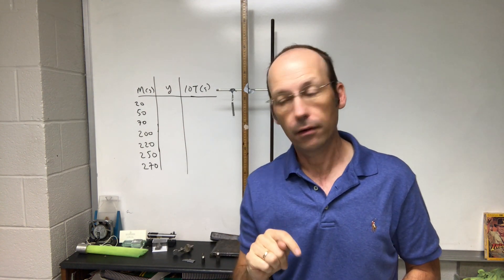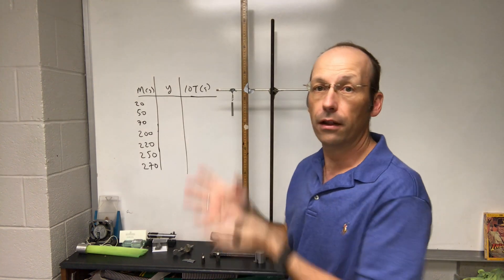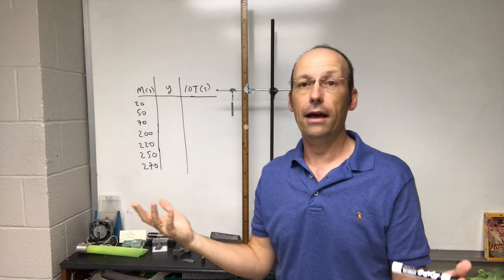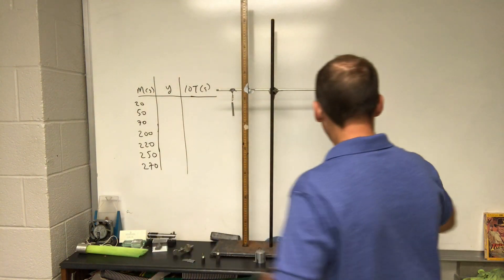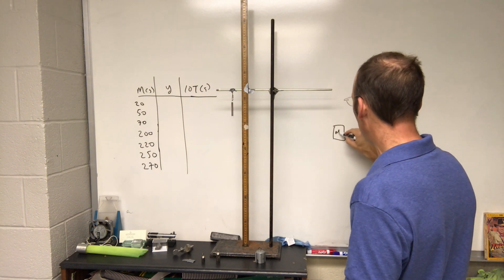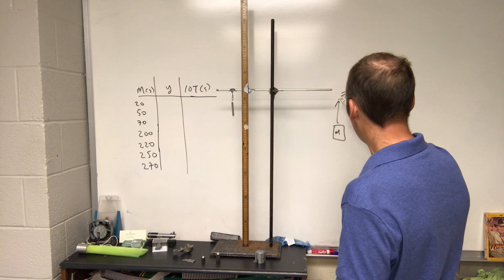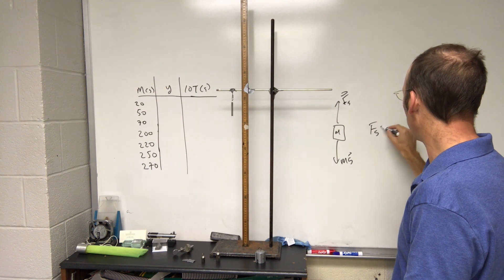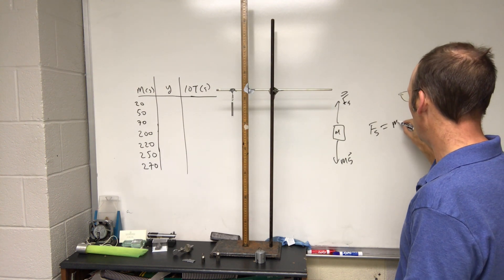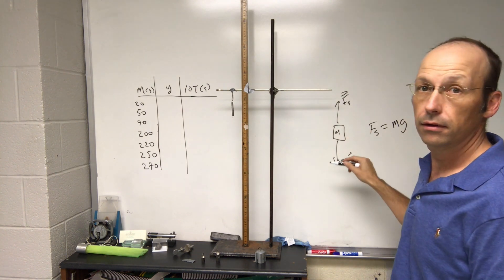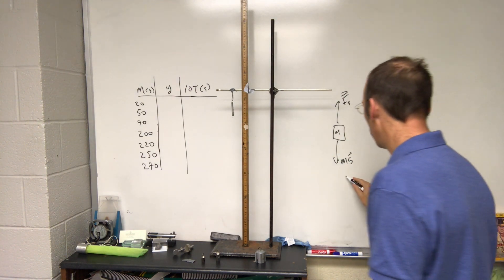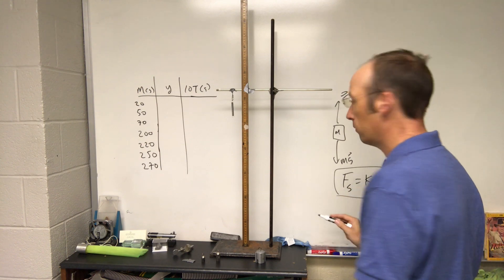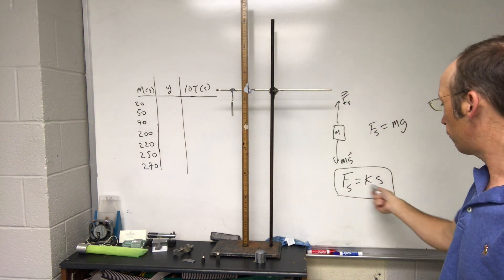The first thing I'm going to do is collect some data — I'm just going to stretch the spring and measure the mass and the stretch. If I put a mass m on here, the spring pulls up with some force F_spring, gravity pulls down mg, and if it's at rest those two are equal, so F_spring equals mg. I also know the spring force model: the magnitude is k times the stretch.